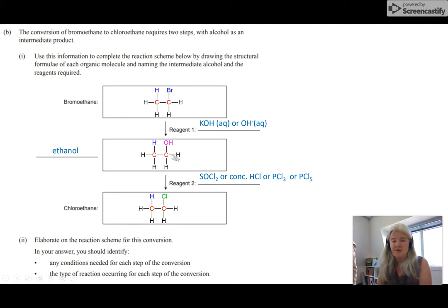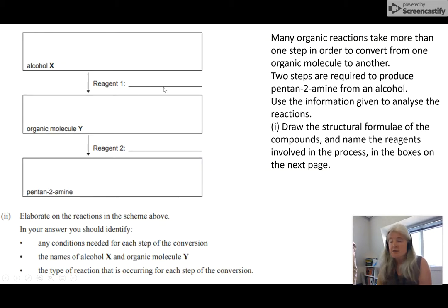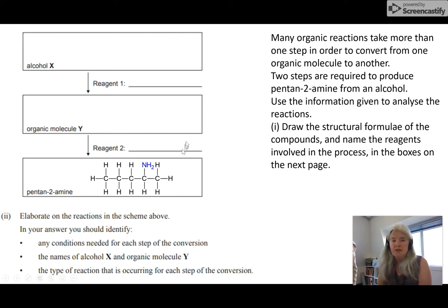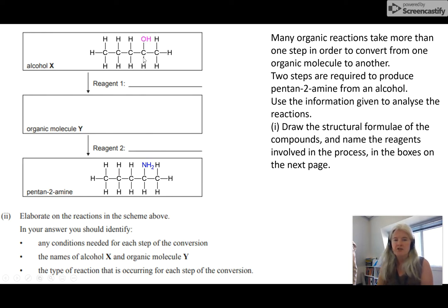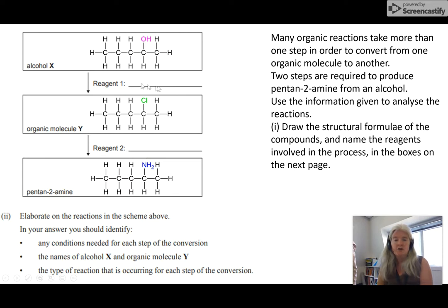Here's another one very similar. Start with what you know — you're given pentan-2-amine, so start with the NH₂ on there, which means you need your alcohol on that second carbon. You have to go via a haloalkane because there's no reaction that goes directly from an alkene to an amine — only from a haloalkane to an amine. So this must be a haloalkane. Start with the OH on the second carbon and therefore a haloalkane — Cl or Br — making sure it's all on the second carbon.